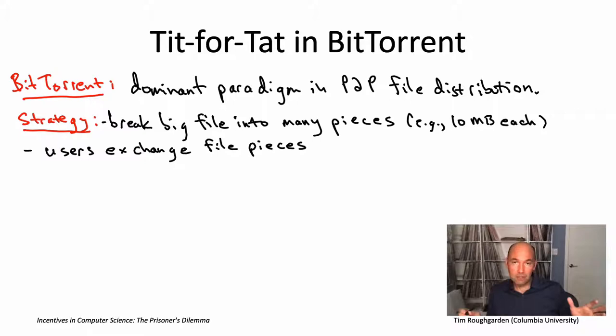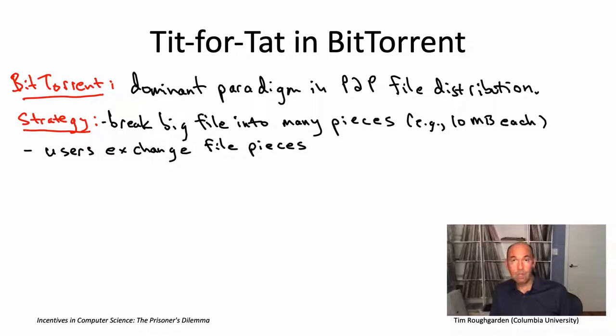Whereas if you break the file into lots of pieces and you need to get many pieces from your other peers, now all of a sudden it more resembles a repeated prisoner's dilemma situation. Because to get the file, you're going to have to get those thousand pieces, which happens over the course of minutes or maybe even an hour or two — giving you the opportunity to monitor what your peers are doing, whether they're being helpful in letting you download pieces, and allowing you to respond in kind, either rewarding or punishing them depending on whether they've been helpful in the past.